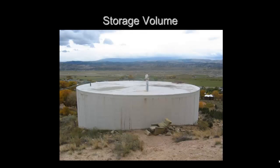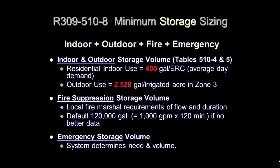We'll now cover the requirements for storage capacity. Drinking Water Rule R309-510-8 provides the requirements for minimum storage sizing. This includes the volume of storage required for indoor and outdoor demands plus fire demands and emergency storage if required. Tables 510-4 and 5 provide the indoor use values for equivalent residential connections or ERCs. Storage for residential indoor use is a minimum of 400 gallons per equivalent residential connection. The storage for outdoor use is dependent on which irrigation zone the system is in. Using Zone 3 as an example, the required volume is 2,528 gallons per irrigated acre. Storage for fire suppression is based on the requirements from the local fire marshal for flow and duration. As a default, 1,000 gallons per minute for 2 hours — which equals 120,000 gallons — is required if no precise data can be determined from the local fire marshal. Emergency storage would be a requirement determined by the system or their engineer.